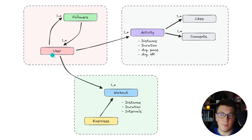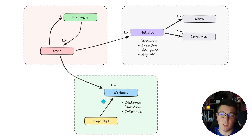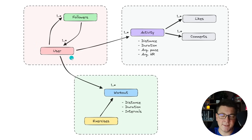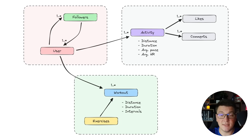The workouts are scoped to a particular user that can have one or many followers, so it's going to be a sort of social application where runners can connect with each other. Each user can maintain a library of workouts, and each workout consists of one or more exercises. The workout is only a template that you apply to actual training, and each individual training instance is represented as an activity. Activities can have likes and comments from other users. This will evolve into a modular monolith architecture, but let's dive into the code and create our first entity.